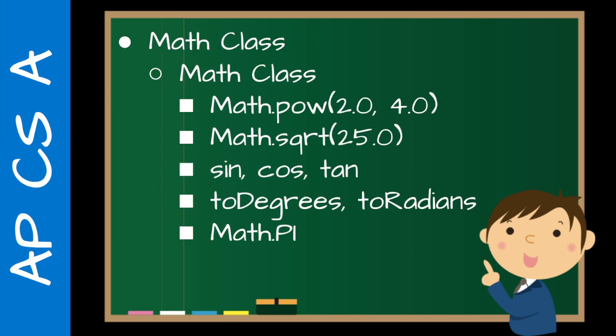Finally in this section, there's the math class, which has methods we can use. The two big ones are Math.pow — which takes doubles, so for example 2.0 and 4.0, giving 2.0 raised to the 4.0 power, which equals 16 — and Math.sqrt, for example Math.sqrt(25.0) gives us 5.0.